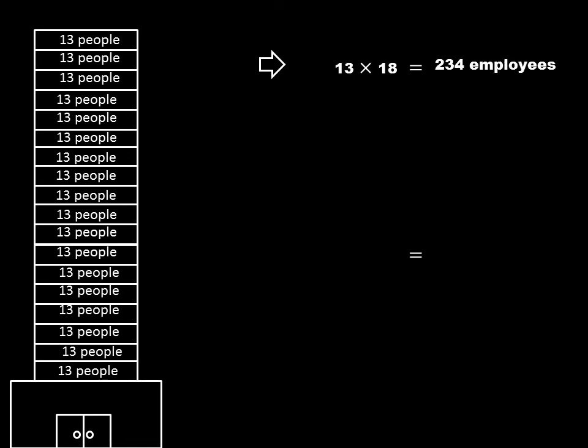18 times 13 is equal to 234 employees. 234 minus 32 is equal to 202 required employees.